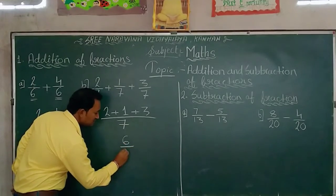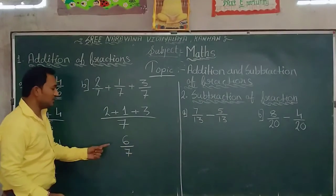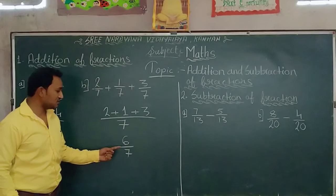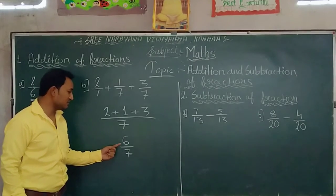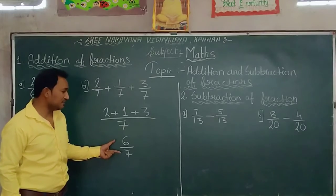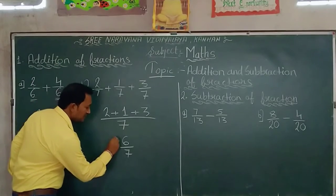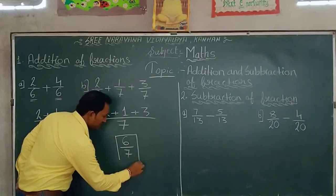Our answer is 6 by 7. Why we will not move further? Because 6 is not divisible by 7 and 7 is also not divisible by 6. It means our answer is 6 by 7.